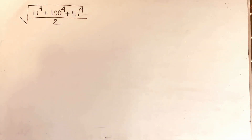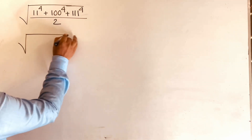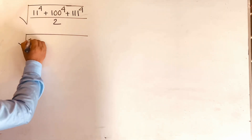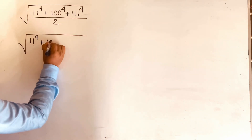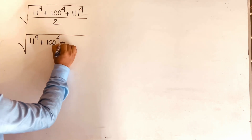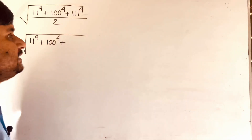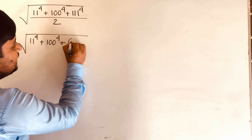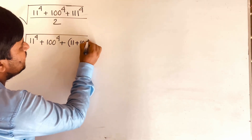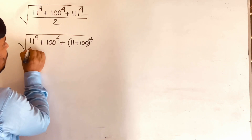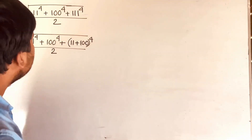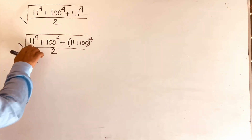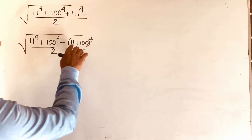First of all, I can see easily it will be square root of 11 to the power 4, and here is 100 to the power 4, and here is 111. I can see it will easily be 11 plus 100, raised to the power 4, over 2. This is 11 and this is 100.